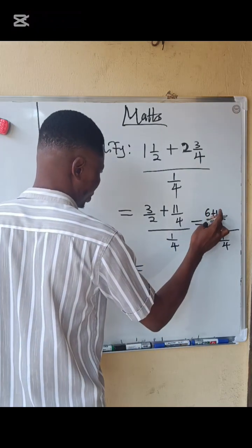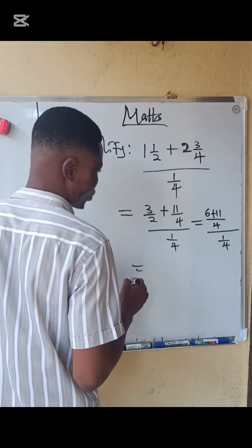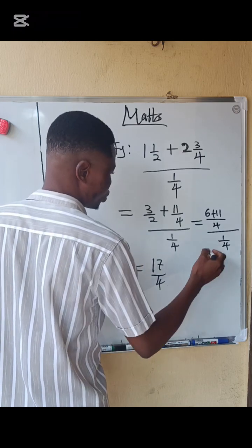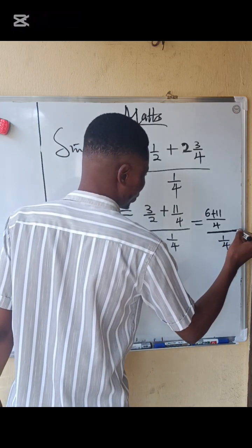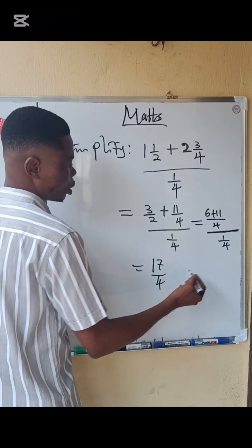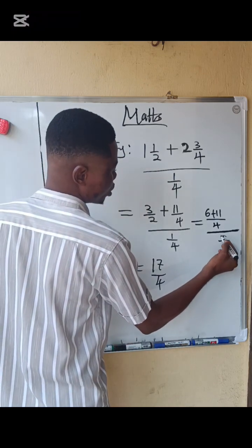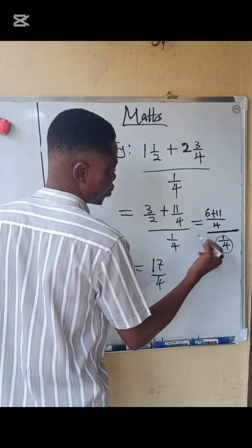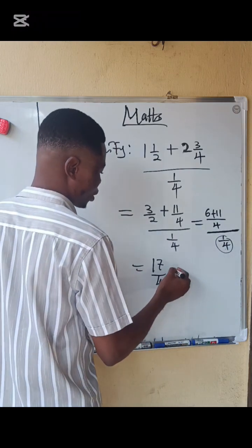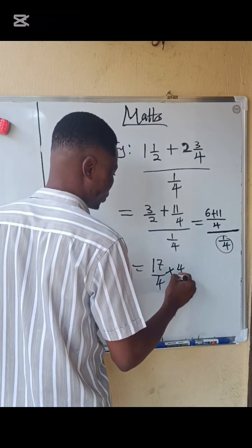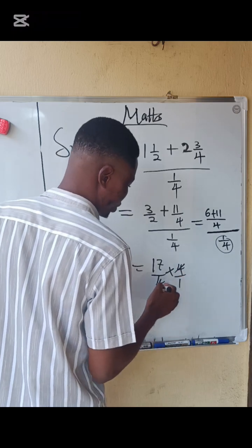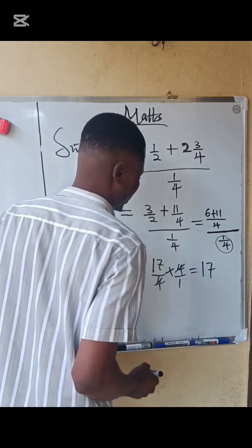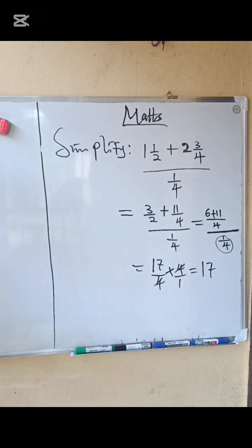I'm going to change this division to multiplication. So when I do that, the denominator of this, this 4, will turn to the numerator and this one will turn to the denominator. So we now have 4 multiplied by 4 over 1. So this 4 will cancel with this 4, so the answer to this question is 17. So that's how you have to simplify something like this.